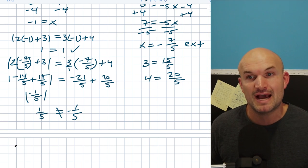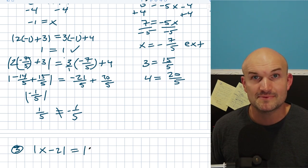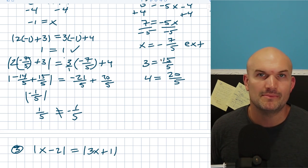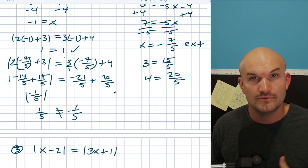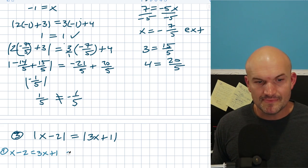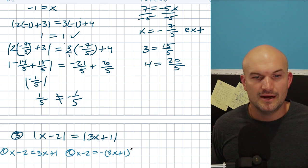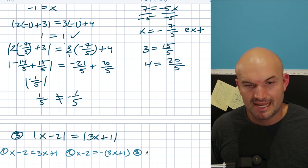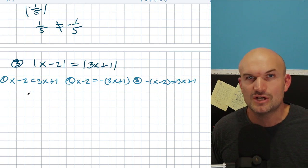What about if we have an absolute value on both sides? Like the absolute value of X minus 2 equals the absolute value of 3X plus 1. On a problem like this, remember there are four cases — for every absolute value you have to include the positive as well as the negative version. So I'll create four cases. Case 1: everything positive — X minus 2 equals 3X plus 1. Case 2: negate the right side — X minus 2 equals negative 3X minus 1. Case 3: negate the left side — negative X plus 2 equals 3X plus 1. Case 4: negate everything.